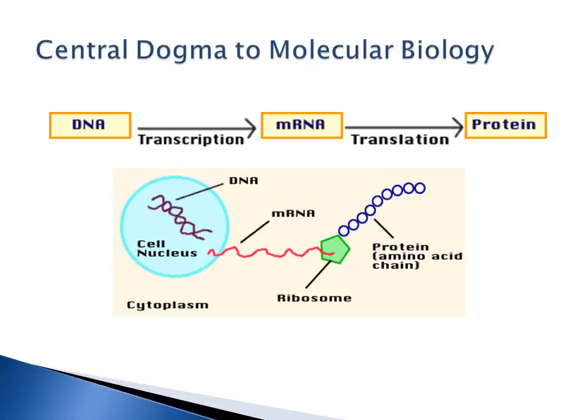The central dogma of molecular biology is the fact that we start off with the genetic material which is DNA. From DNA we have transcription to make messenger RNA. Once we have our messenger RNA, we then undergo translation to make our proteins, and the proteins are the workhorses of the cell. This lecture is focusing only on transcription and the making of messenger RNA.